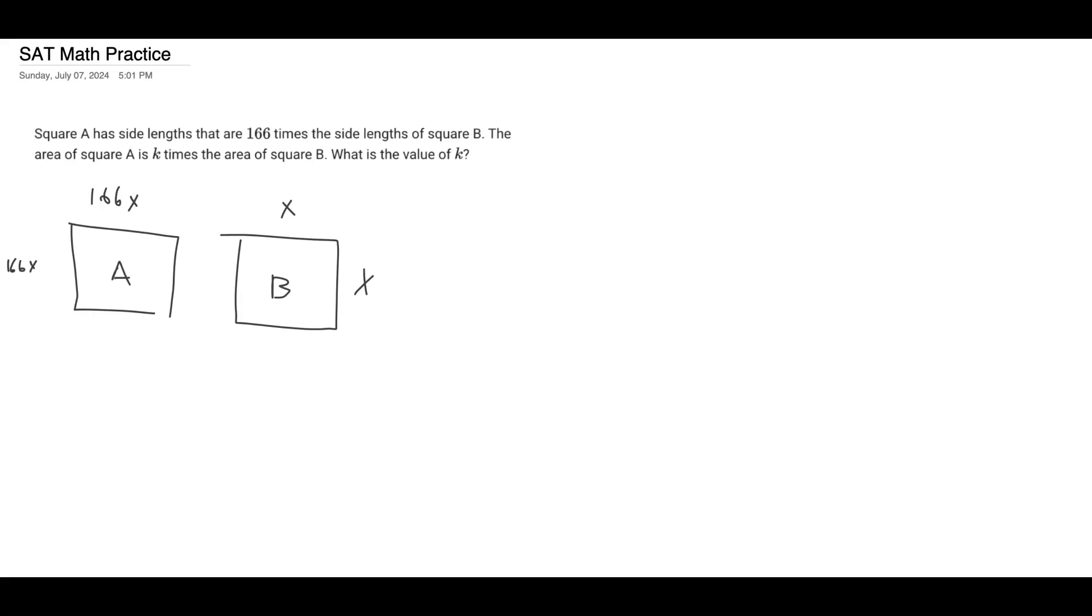And so to find the area of square, we'll just do length times width. So if we have x times x, that will give us x squared. And then we want to set this in proportion to 166 times 166x. So what that's going to give us is 27,556x squared.